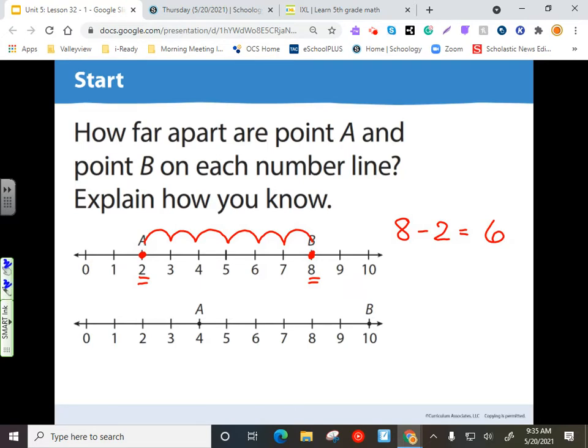For the second line, we've got a point at 4, and then we have a point at 10, and we can go 1, 2, 3, 4, 5, 6. Or, like we did up here, do 10 minus 4, and that's also 6.